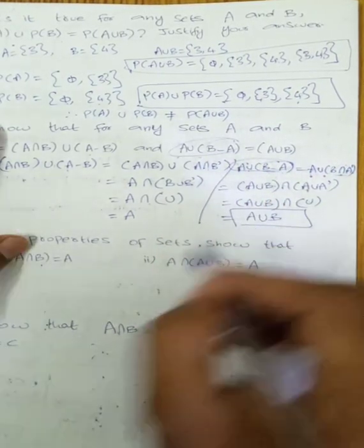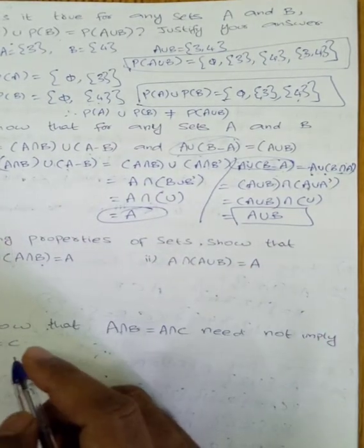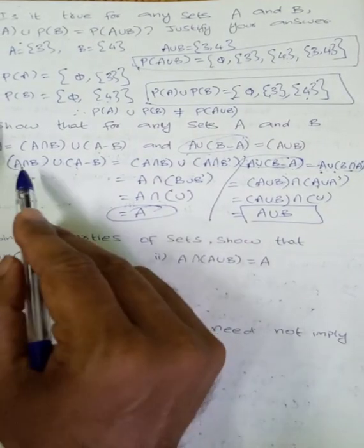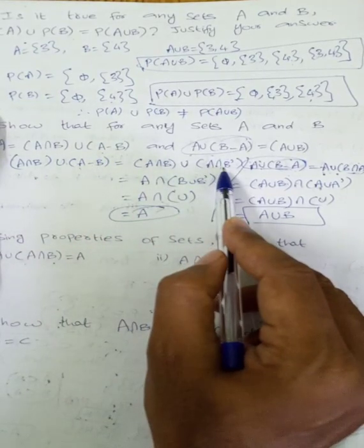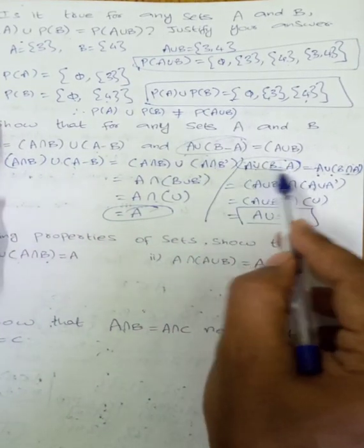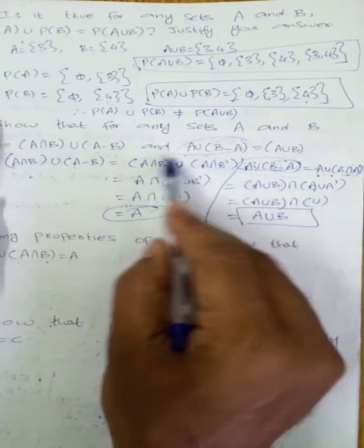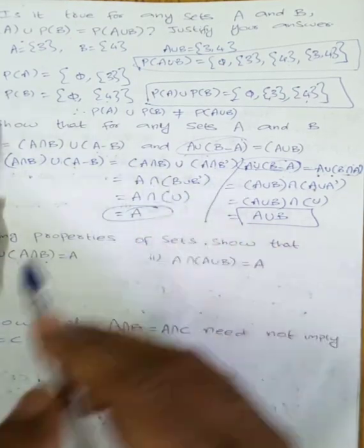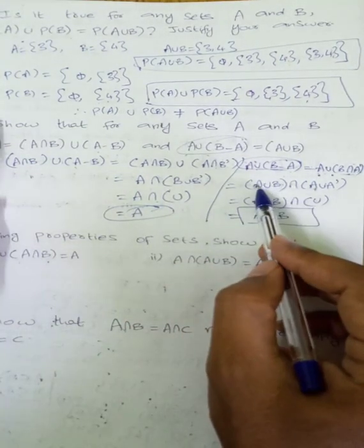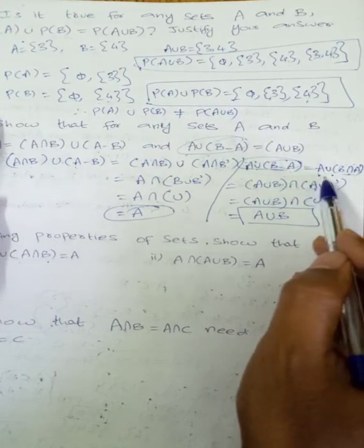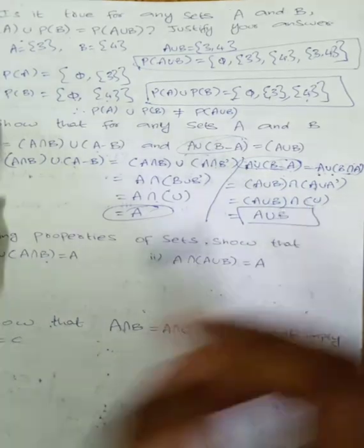A union B minus A equals A union B. For A intersection B union (A minus B) equals A: A minus B equals A intersection B complement. Then A intersection B union B gives A intersection universal set, which equals A. Similarly, A union B minus A uses A union B intersection A complement, which gives A union B.